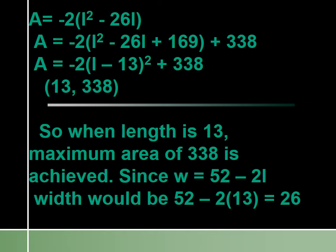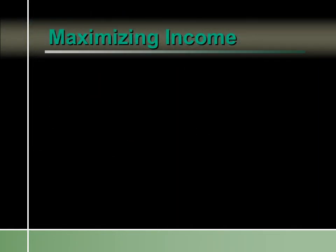Our vertex is (13, 338), which tells us that when the length is 13 feet, we get a maximum area of 338 square feet. And since W equals 52 minus 2L, the width would be 52 minus 2 times 13, which equals 26. So we have a width of 26 feet.